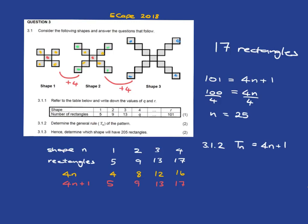Okay, and then let's just quickly finish off 3.1.3, which is in fact a very similar question. It says which shape will have 205 rectangles? Well, it's the same process. 205 is equal to 4n plus 1, because 205 is the number of rectangles, and this formula is what gives us the number of rectangles. And we asked which shape, so we want to get the n. So we just solve this equation, and we'll get 204 is equal to 4n. Divide both sides of the equation by 4, and we will get that n is equal to 51.